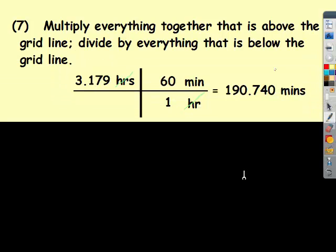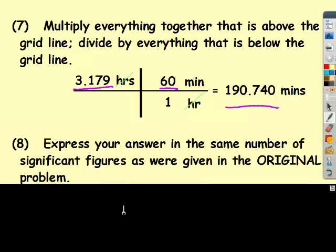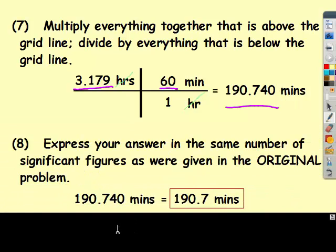And so now all I need to do is multiply across. So multiplying across, I get 3.179 times 60. And I get this number, but we do need to put it in the correct number of significant figures. So my first answer, or the number given, had four significant figures. So rounded to four significant figures, you get 190.7 minutes.